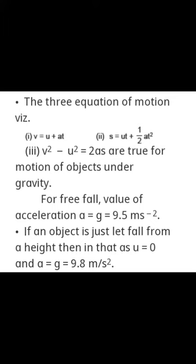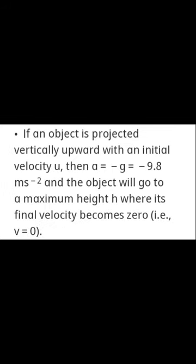If an object is just let fall from a height, then in this case u = 0 and g = 9.8 m/s². But if an object is projected vertically upward with an initial velocity u, then acceleration is equal to −9.8 m/s². The object will reach a maximum height where its final velocity becomes 0. When something is thrown upward, gravitational acceleration becomes negative because the object is going up while gravity acts downward, and at maximum height velocity becomes 0 and the object starts returning towards earth.